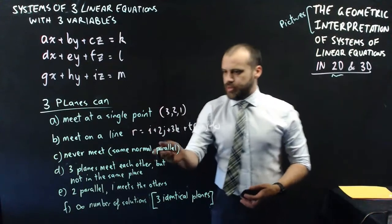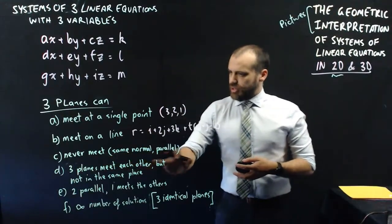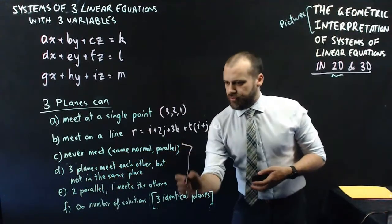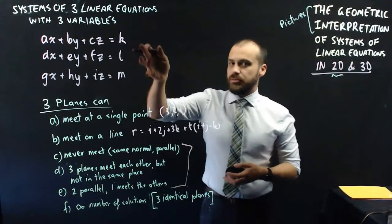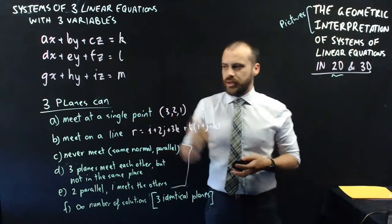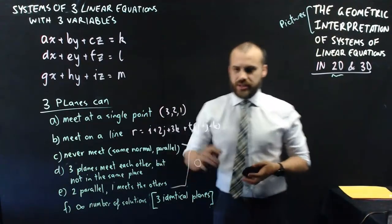Now, they never meet. They're the same. They're all parallel. Three planes meet each other but not in the same place. Two parallel. One meets the others. All three of these instances, this system of linear equations is not going to have a single solution. It's not going to have a point, and it's not going to have a line either. And finally, we'll just put zero there, zero solutions.